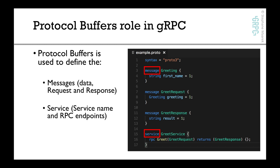We'll define the service using protocol buffers. Our service, as we'll see later, will basically define our API endpoints, and this will allow gRPC to generate code for us. Everything you learn in the protocol buffer course will be used to generate services in gRPC. The beautiful thing is that gRPC, just like protocol buffers, will be able to generate code for you.